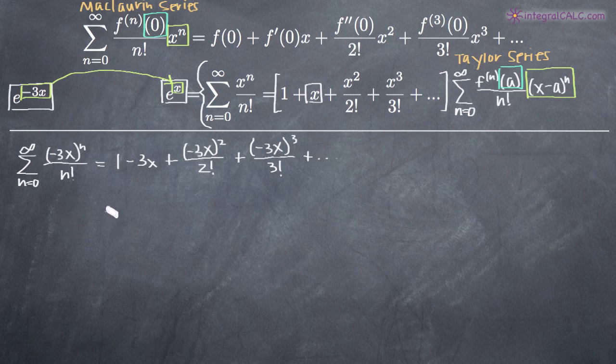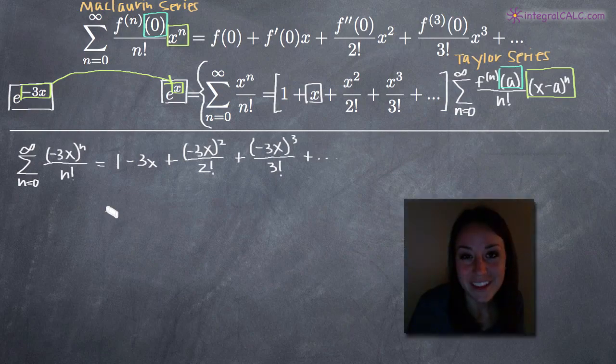So that's it. That's how you write the Maclaurin series for something like e to the negative 3x. And again, if your function falls within the parameters of e to the x no matter what that exponent is or cosine of x or sine of x, Maclaurin series gives you a very specific formula to write the series for that particular function. I hope this video helped you guys and I will see you in the next one.